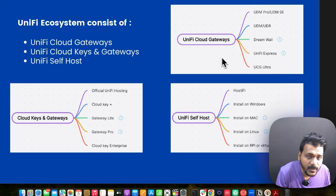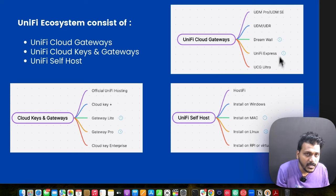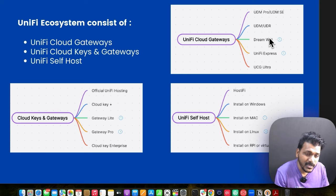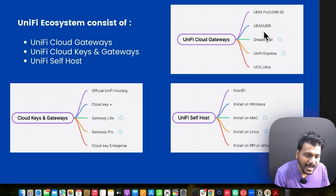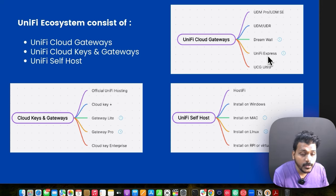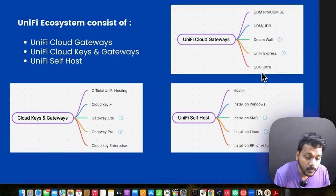Under the Cloud Gateways you will see the UDM Pro, UDM SE, UDR, and Dream Wall. These are for medium-size businesses and support full applications. UniFi Express is a small travel router which supports up to four UniFi devices — it has only one WAN and one LAN port. The UCG Ultra — UniFi Cloud Gateway Ultra — was recently launched by Ubiquiti, supports dual WAN, multi-WAN, and 1 Gbps connections.